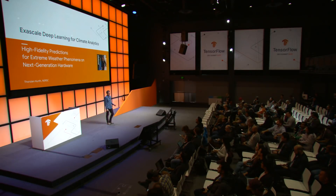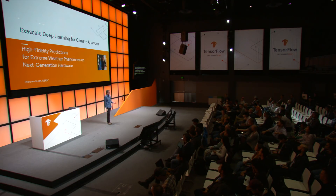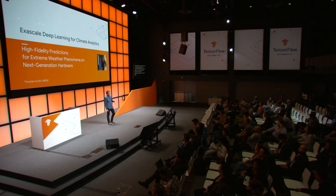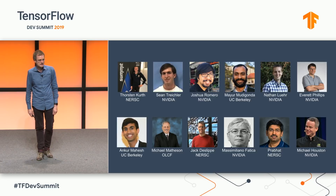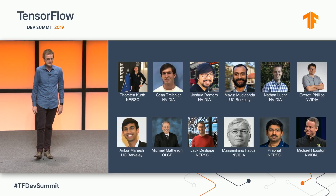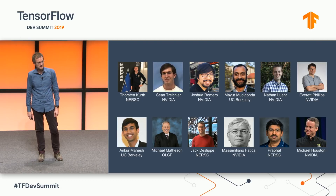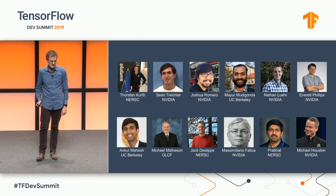Hello and thank you everybody for attending the afternoon session. My name is Thorsten Kort and I'm an application performance specialist at NERSC. My day-to-day work is helping scientists to optimize their codes for contemporary supercomputer systems. Today I'm going to talk about a project combining three things I'm excited about: exascale computing, deep learning, and climate change. This is a team effort — thank you to everybody in this collaborative effort between NERSC, NVIDIA, UC Berkeley, and Oak Ridge.